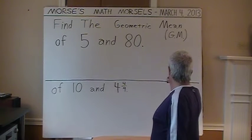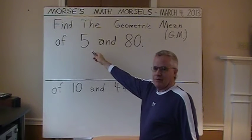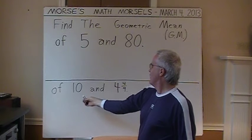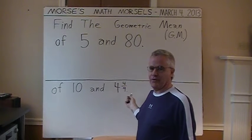The first example asks for a geometric mean of 5 and 80, and later on of 10 and 4 and 4 ninths.